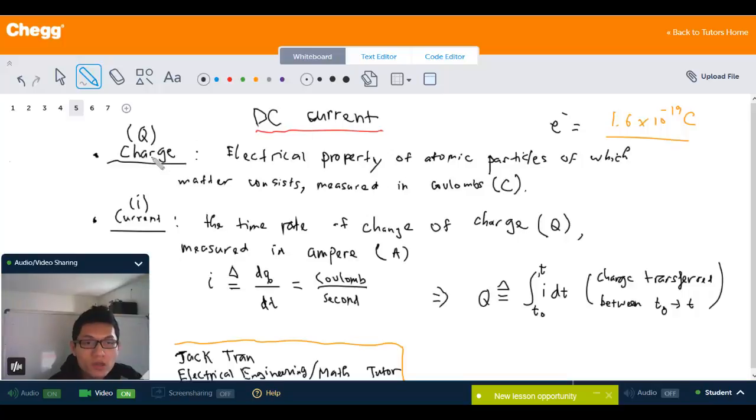Charge is the electrical property of atomic particles that matter consists of, and the unit is measured in coulomb. Recall from any chemistry class we all know that the atomic particle consists of electron, proton, and neutron. Each electron has the value of 1.6 times 10 to the negative 19 coulombs in magnitude.